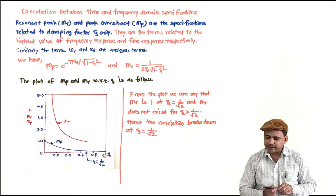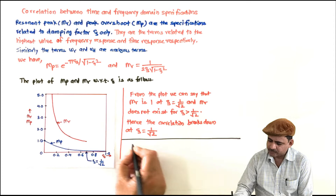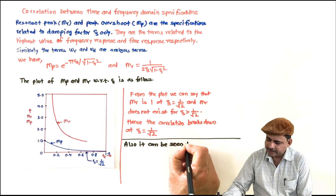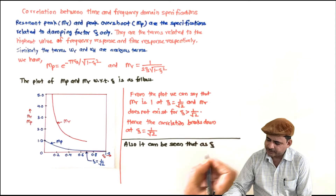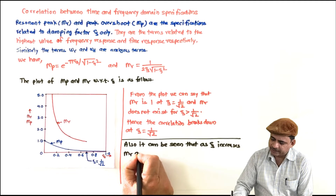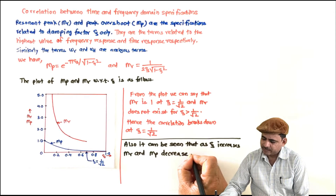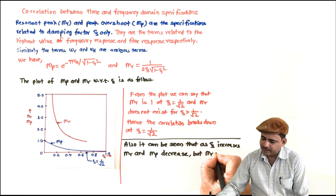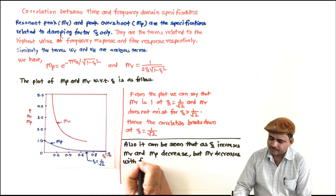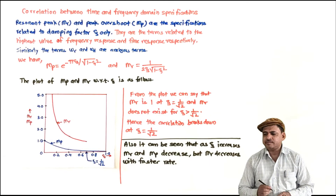What is the correlation? As zeta increases, both MR and MP decrease, but MR decreases at a faster rate. These are the two conclusions from the graph that describe the correlation.